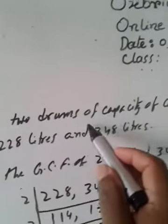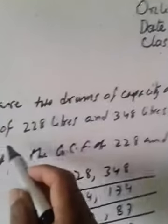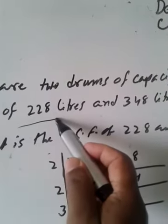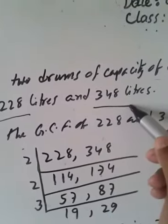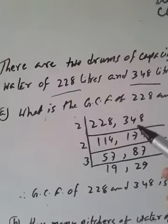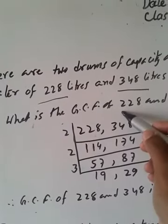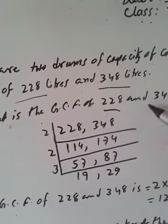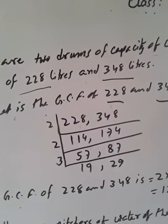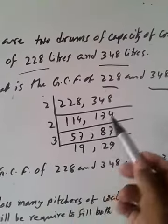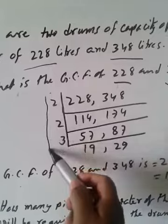there are two drums of capacity containing water, 228 litre and 348 litre. What is the GCF? GCF of 228 and 348. So, we have to do in Euclid's method or short method.